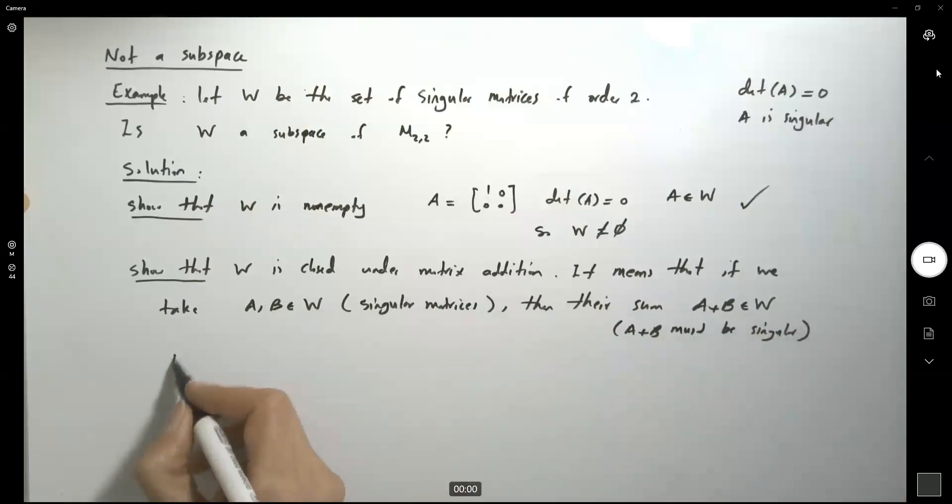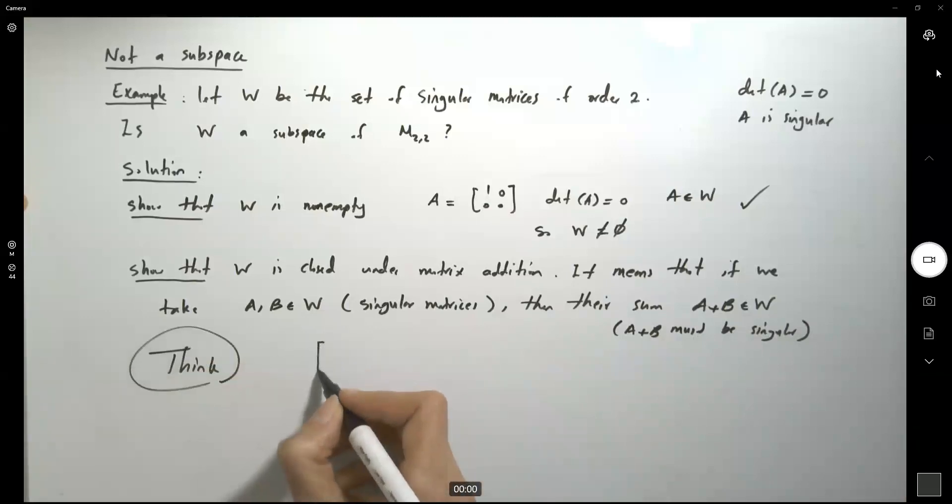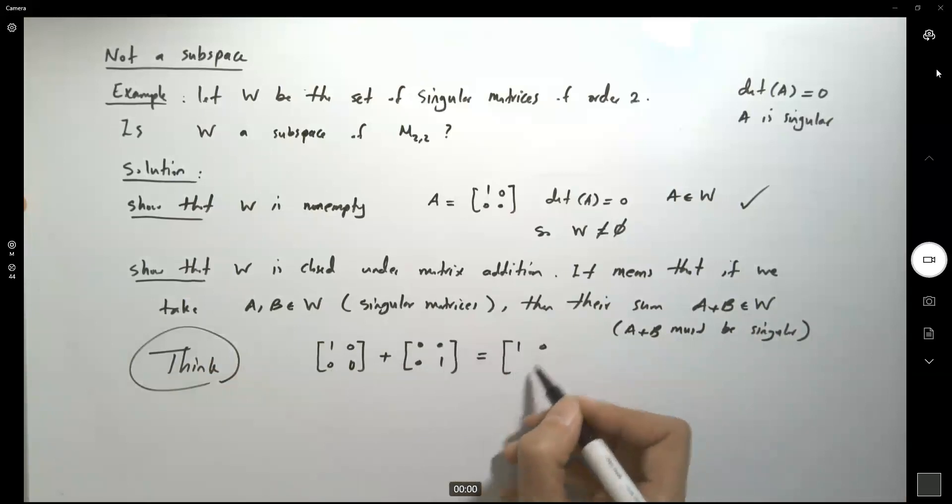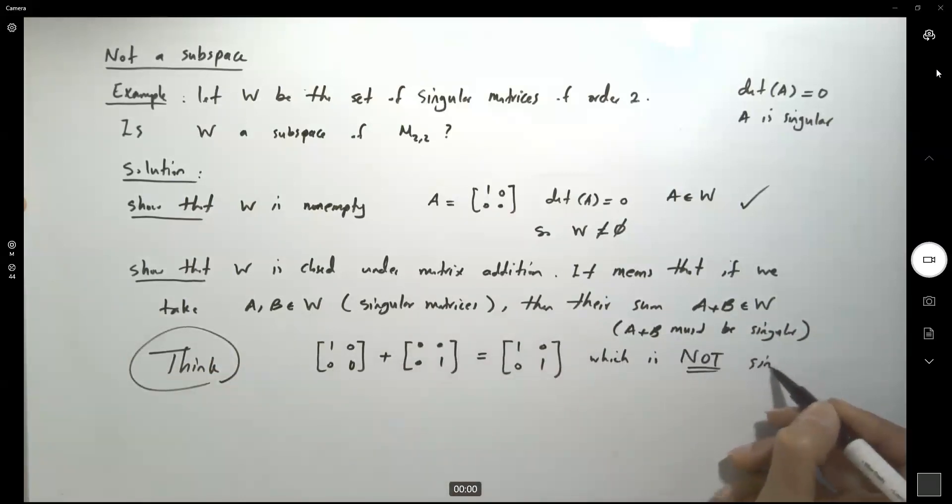Well, let us think a little bit. If we take, for example, these two matrices [1,0,0,0] and add it to another matrix [0,0,0,1], both of these matrices are singular, but their sum is [1,0,0,1], which is not singular.